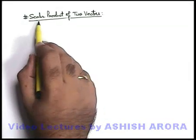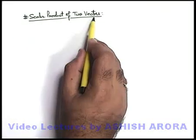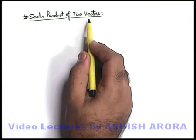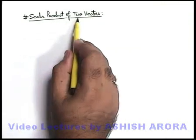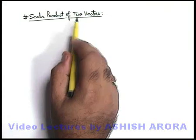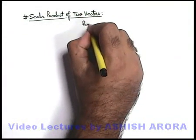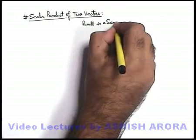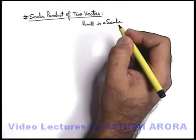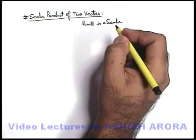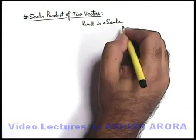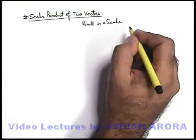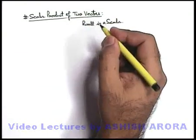Now we'll study in detail about the scalar product of two vectors. As we have already studied, when we talk about scalar product, the result is a scalar which does not have any direction. There are several ways by which we can calculate the scalar product.